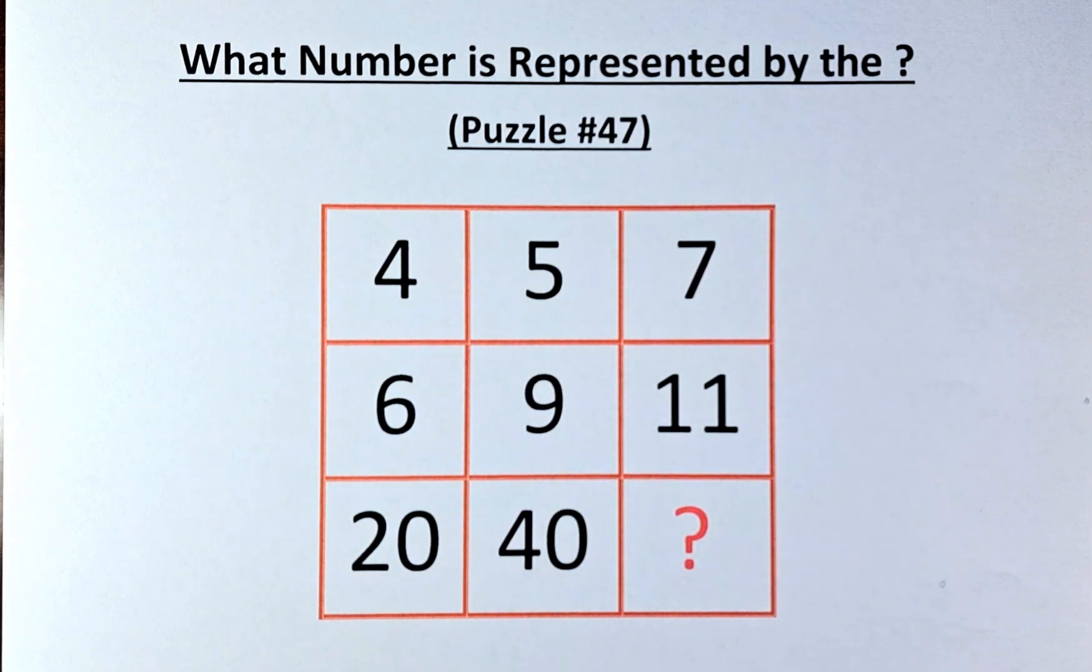In the first row, we have 4, 5, and 7. In the second row, we have 6, 9, and 11. And in the final row, we have 20, 40, and a question mark.